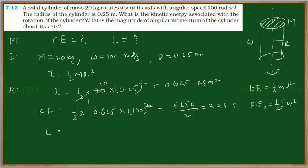Now, angular momentum L is equal to I omega, which is equal to 0.625 into 100, which is equal to 62.5 joules second is the angular momentum of that cylinder.